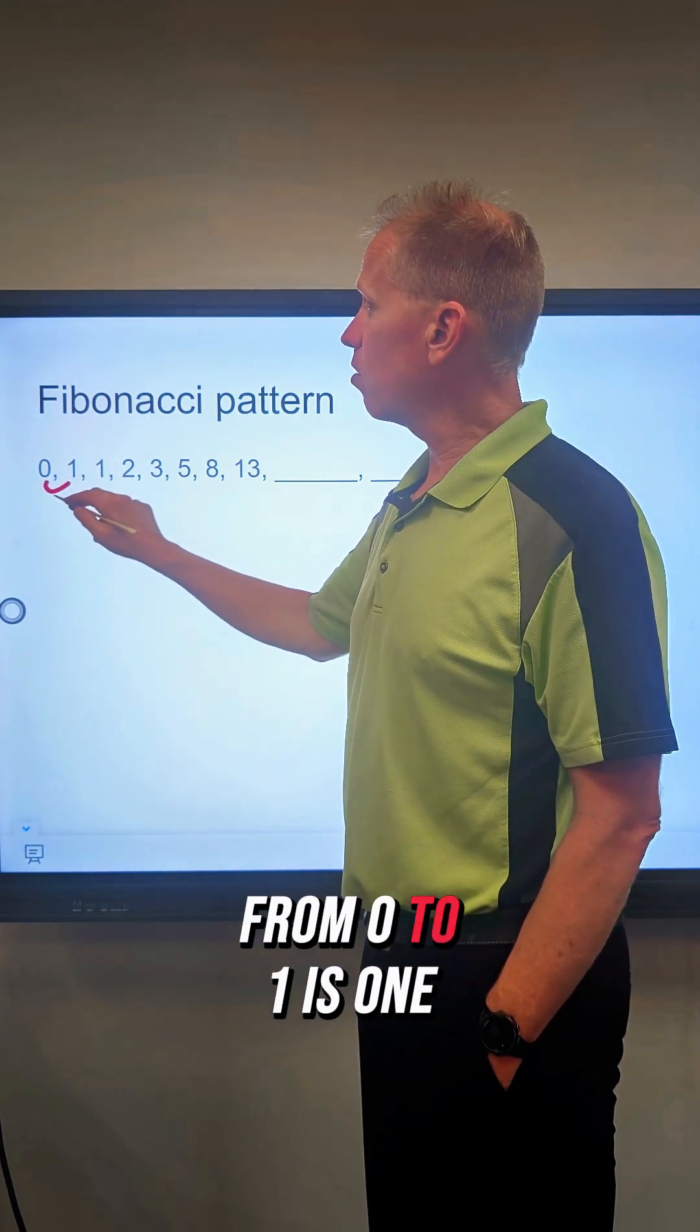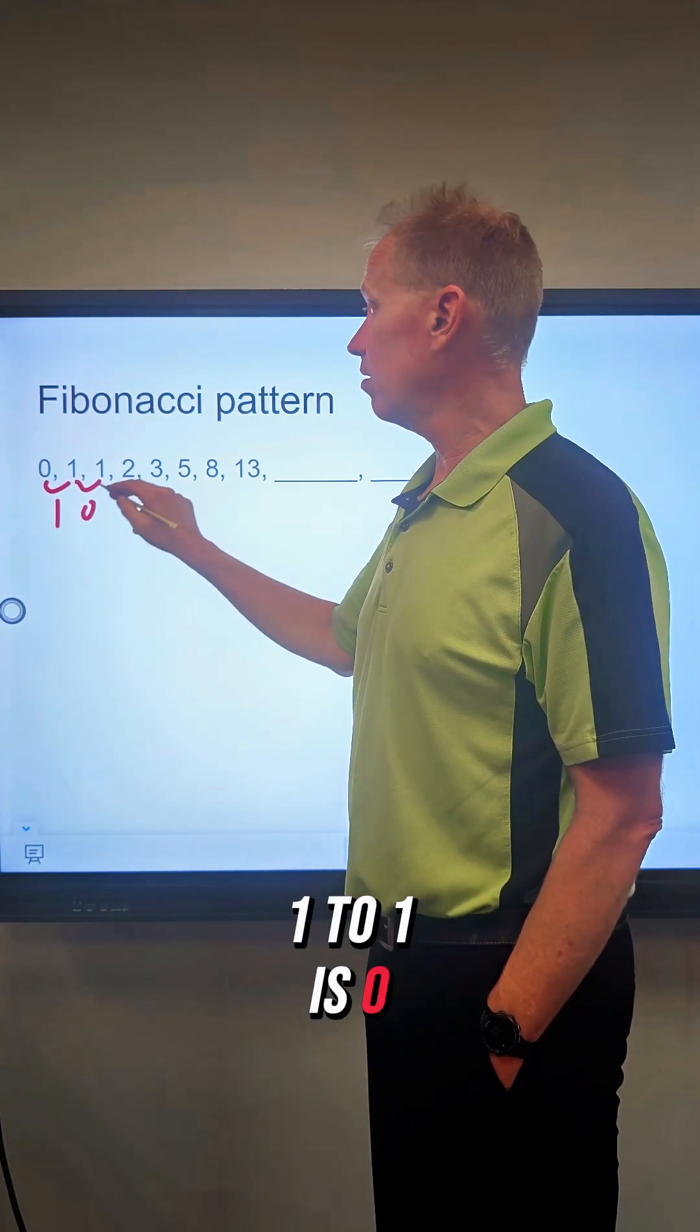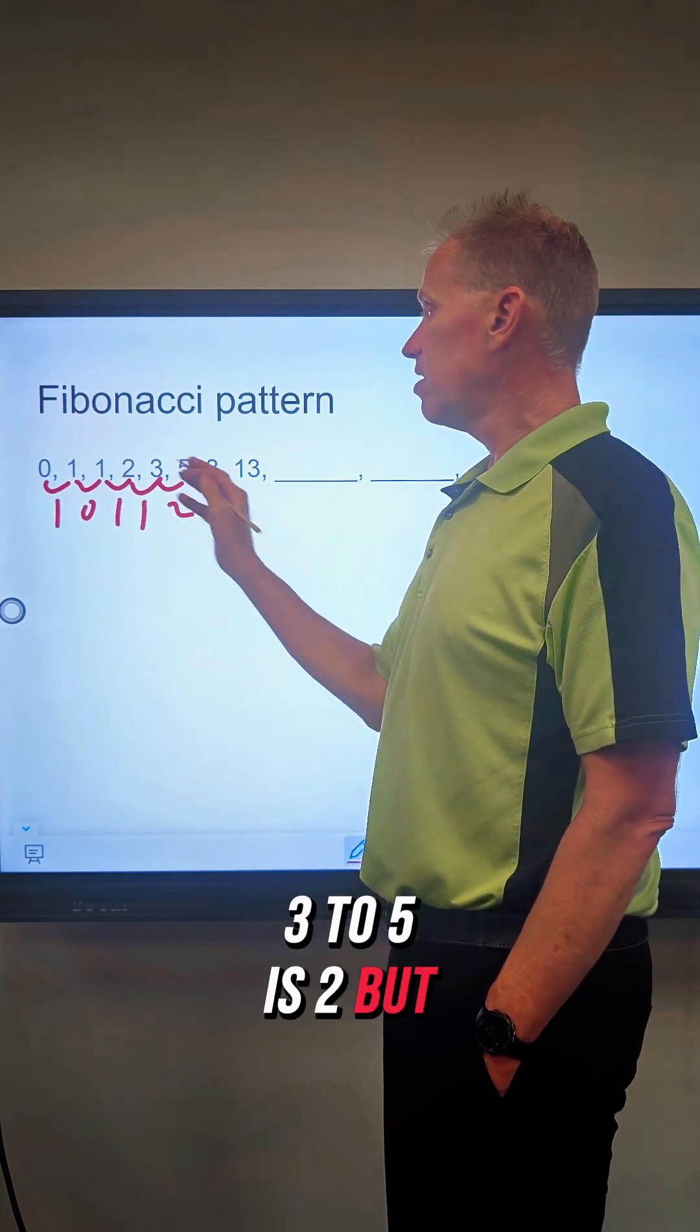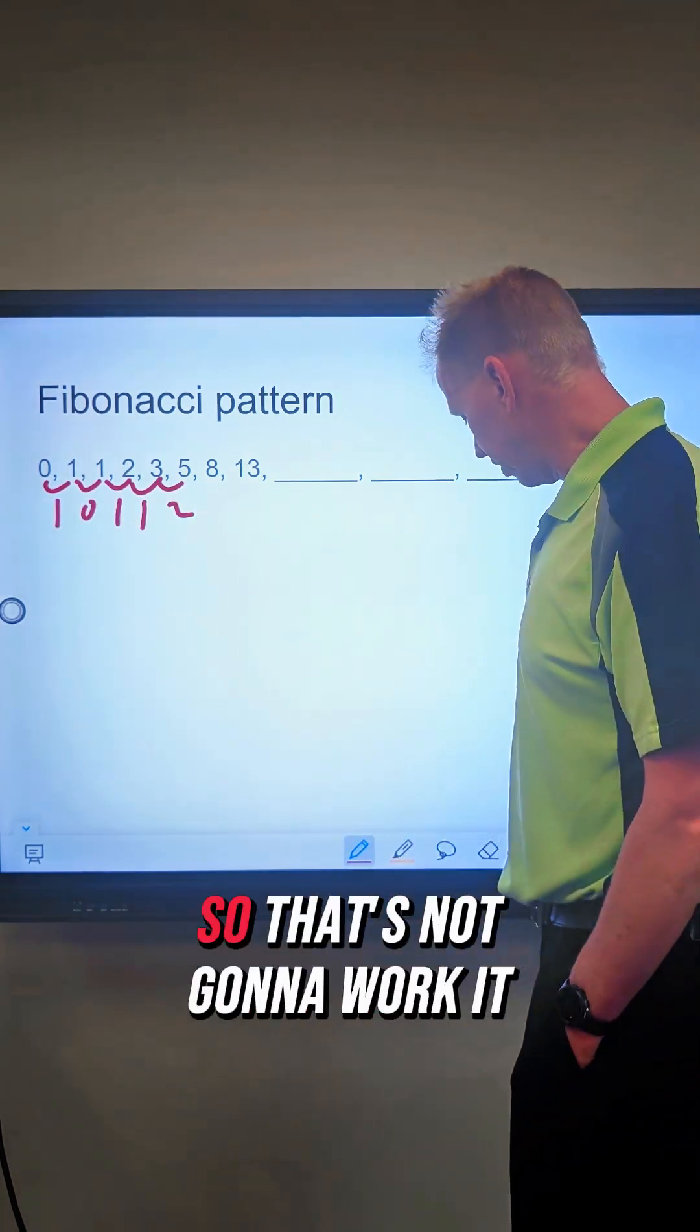One might think you would just say, okay, 0 to 1 is 1, 1 to 1 is 0, 1 to 2 is 1, 2 to 3 is 1, 3 to 5 is 2, but you kind of start seeing there's not a pattern there. So that's not going to work.